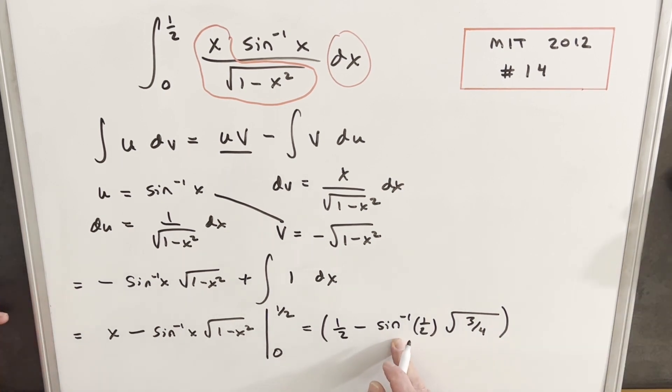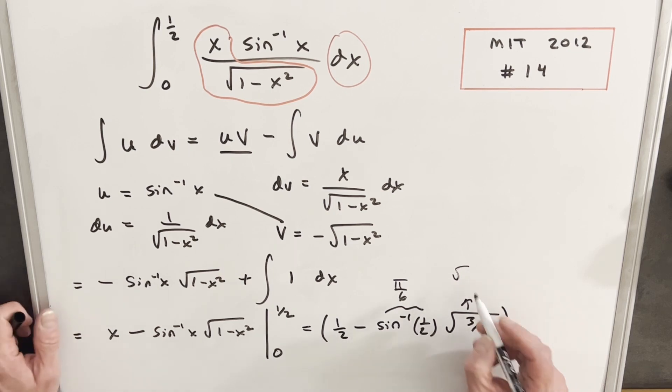Then just to finish this off, let's evaluate arcsin at 1/2. That value is just going to be π/6. And then this can be simplified right here. 4 is a perfect square, so we can write this as square root of 3 over 2.